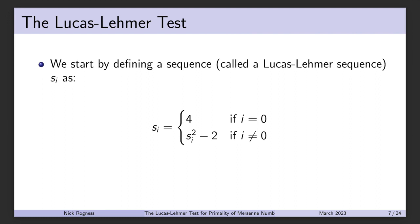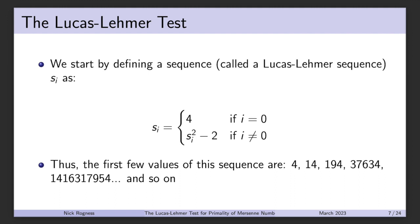The first term of the Lucas-Lehmer sequence is 4. To get the next term, we take the previous term, square it, and subtract 2. So the first few values are: 4, then 4 squared minus 2 gives 14, then 194, then 37,634, and so on as it gets extremely large.